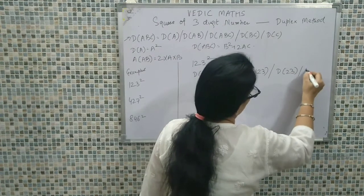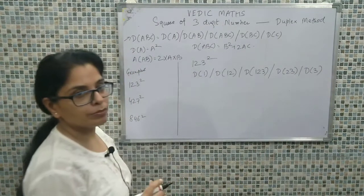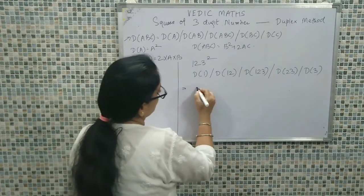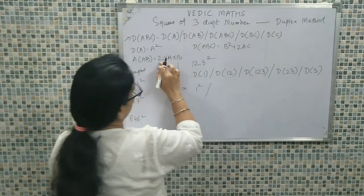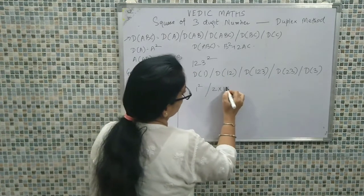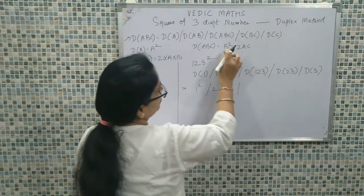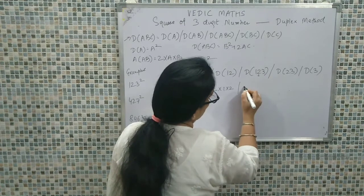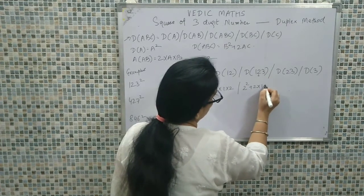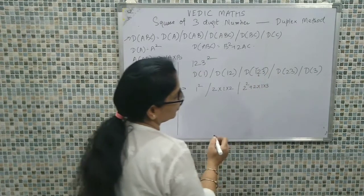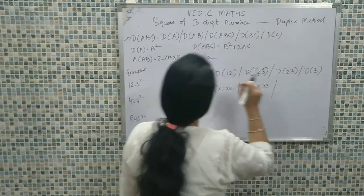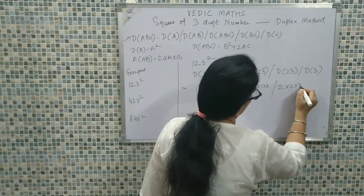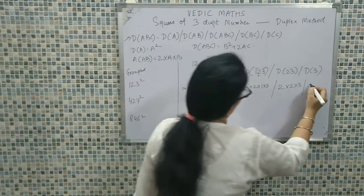Then duplex of 2-3, and finally duplex of 3. The duplex of a single digit is its square. The duplex of a two-digit number is 2 times the product of both values. The duplex of a three-digit number is the middle digit squared plus 2 times the extreme values. Here the middle value is 2, so it is 2 squared plus 2 times 1 times 3.